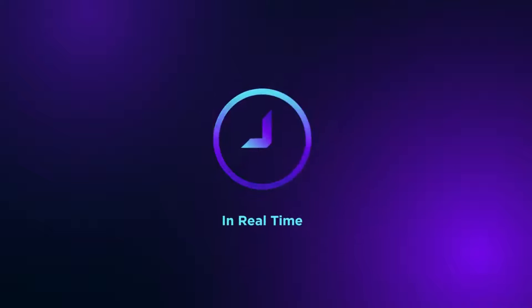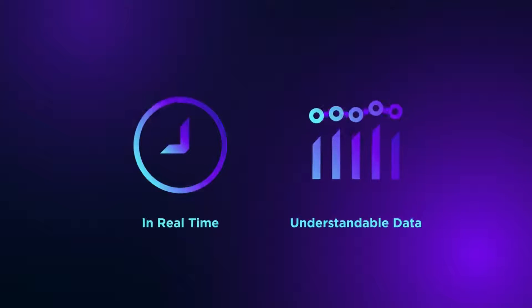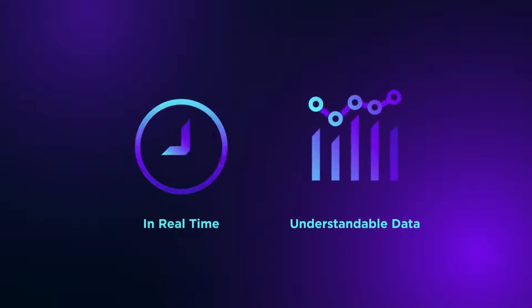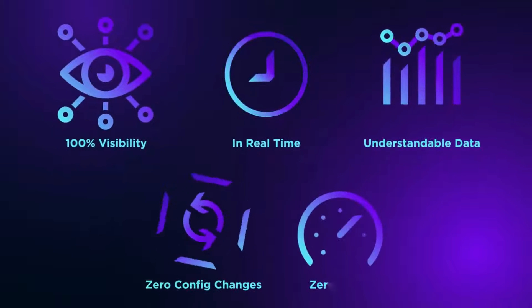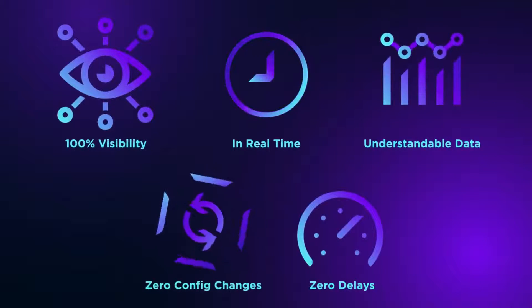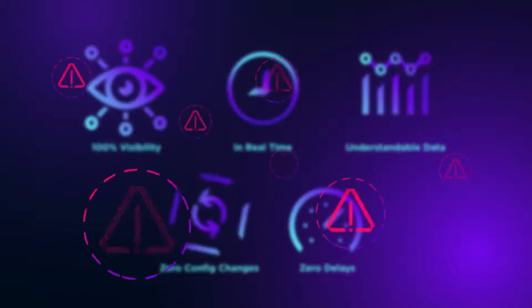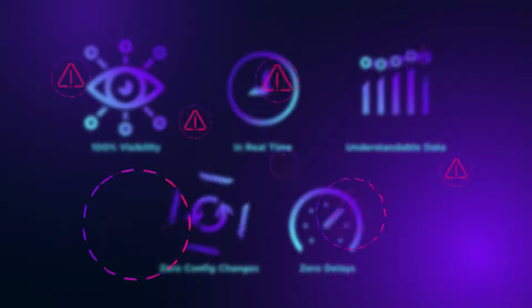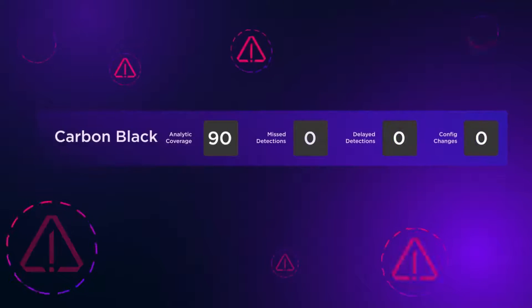Singularity EDR automatically tracks the adversary in real-time, placing all the data into easily understandable context. Singularity EDR misses nothing and provides 100% visibility with no config changes and no delays. Over two days of testing, the SOC analyst is presented with a total of seven campaign-level console alerts describing what Carbonac and FIN7 did and who was affected. Carbon Black, on the other hand, provides only 89% visibility with 20 missed detections.